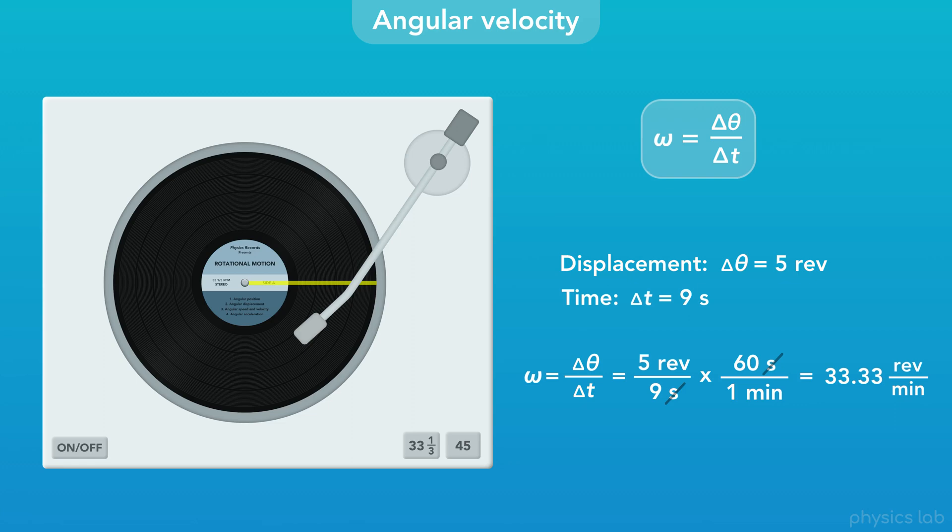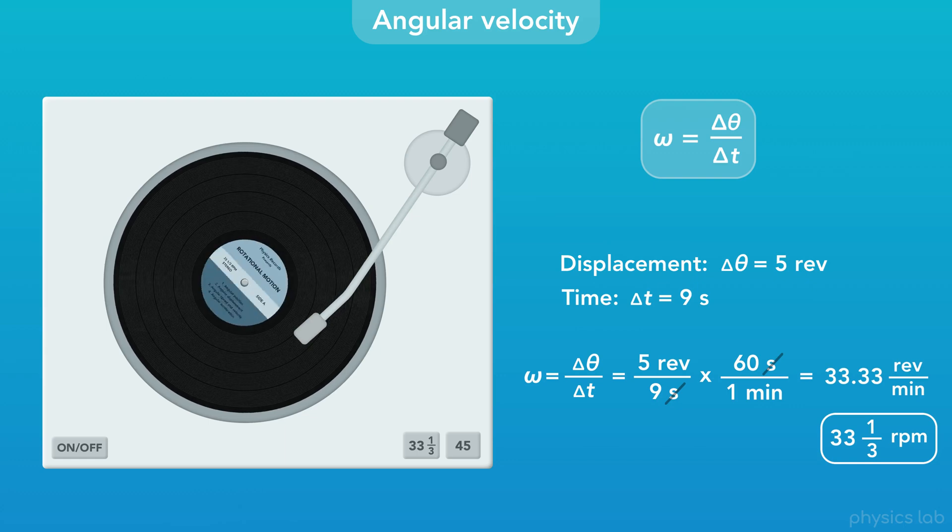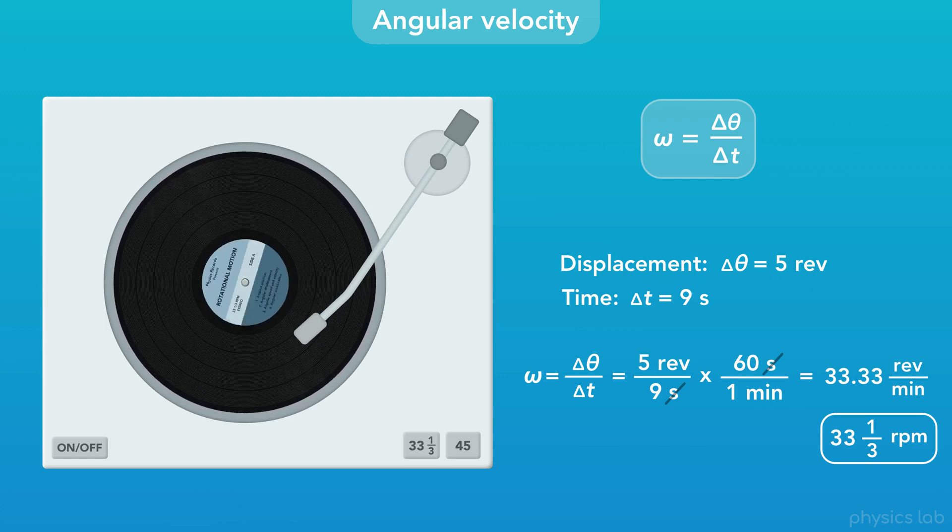Revolutions per minute is a pretty common unit, and we abbreviate it as RPM. So this record has an angular velocity of 33 and a third RPM. That's how fast most records spin while they're playing.